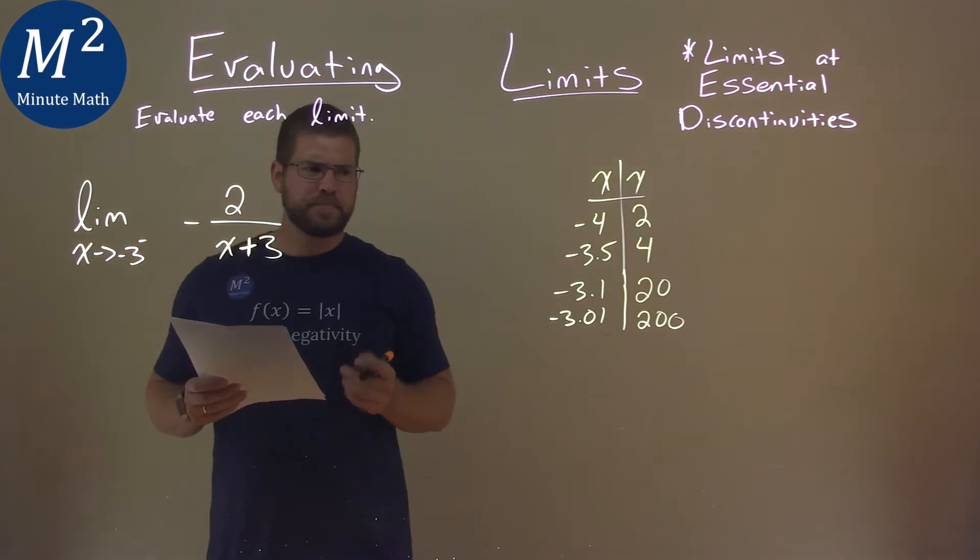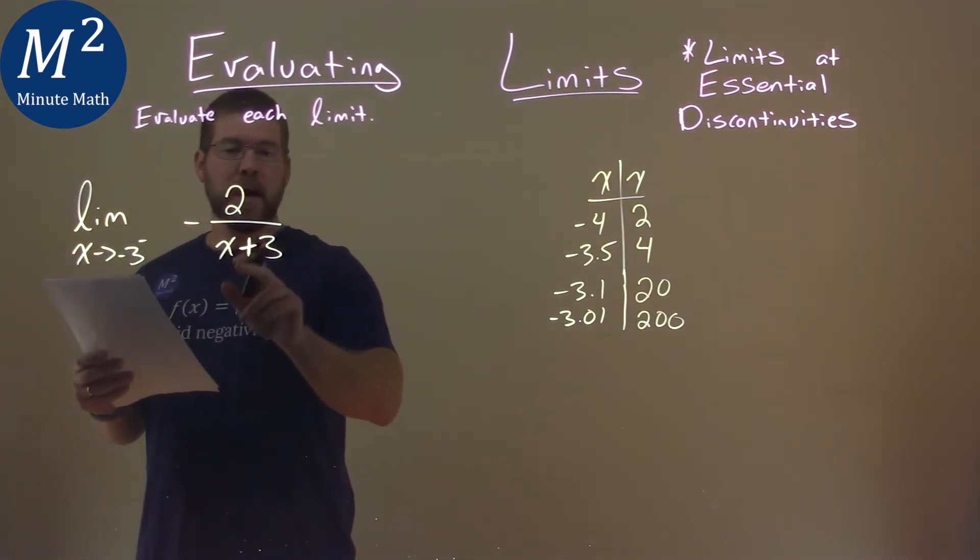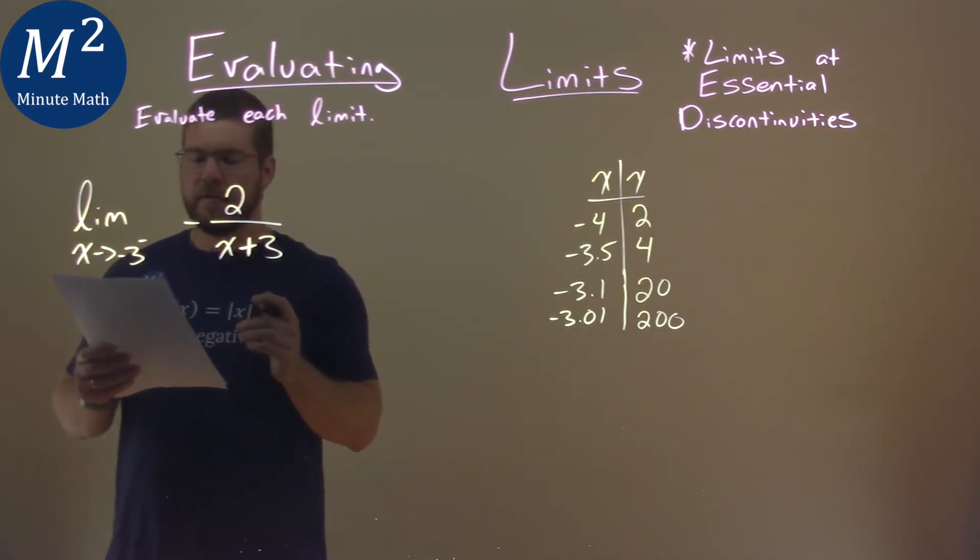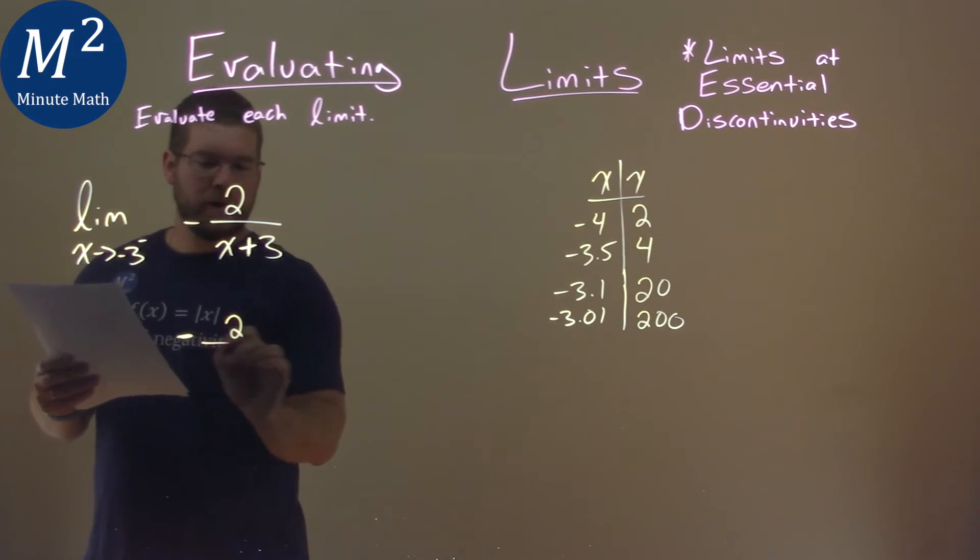Let's double check this. If I plug in a value that's just to the left of negative 3, I'm going to look if this is overall a positive or a negative. So I put a negative out here, and we have a negative 2 up top, or 2.